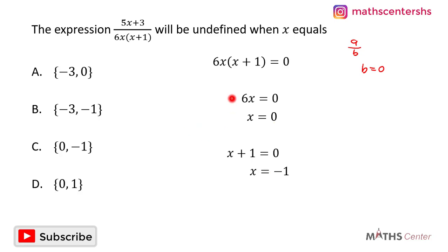So we have the two values of x for which 6x times x plus 1 is equal to zero. They are zero or negative 1.